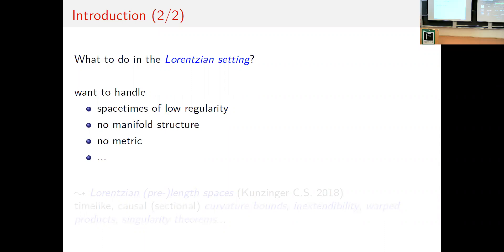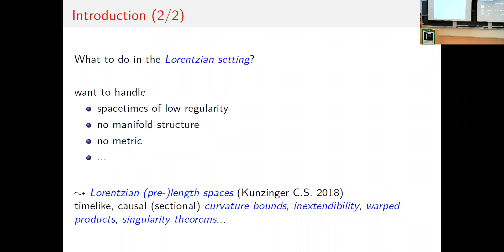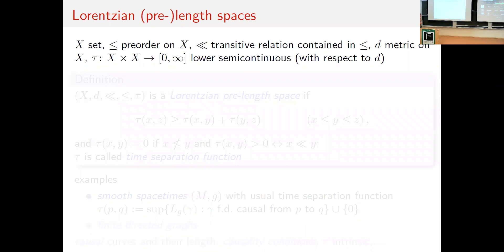We want to handle spacetimes of low regularity — where the metric is not smooth, not C², maybe just continuous. We may also want to handle the case where there is no manifold structure, or even no metric. This led us to what we call Lorentzian pre-length spaces and Lorentzian length spaces, joint work with Michael Kunzinger. We were able to define time-like curvature bounds as analogs of sectional curvature bounds via triangle comparison, apply these to extendability questions, and prove the first synthetic singularity theorems.